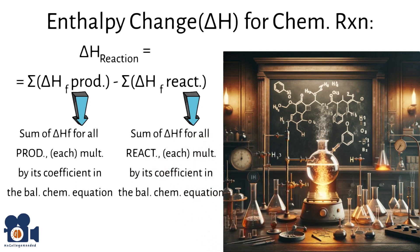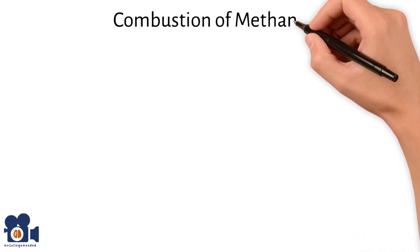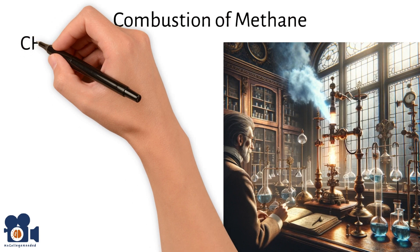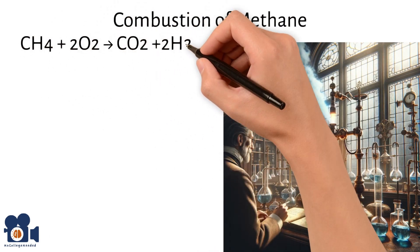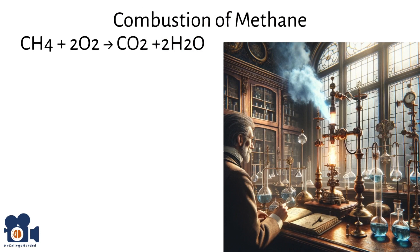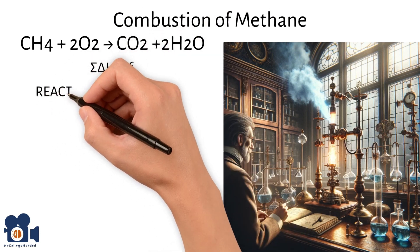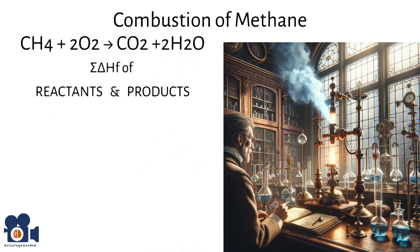Let's go through an example with our handy combustion of methane. The equation for the combustion of methane is CH4 gas plus 2O2 gas going to CO2 gas plus 2H2O liquid. Now we need to sum the delta Hf of the reactants and products.